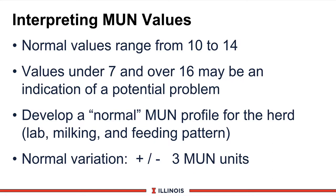Also remember that normal variation is plus or minus three points. So if my value is 12 this month and 13 next month, it went up but statistically probably didn't change at all. We're looking for big changes and big swings — and then you must ask why that number changed.